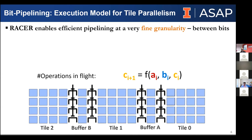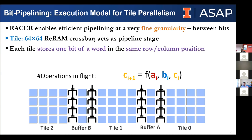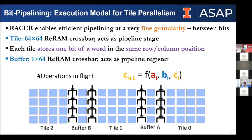We find a way to do very fine-grain pipelining that allows us to make up for a lot of this performance. We have tiles that we treat almost the same as pipeline stages. Each tile holds one bit of one word, so multiple tiles are needed to make up a single word of data. We introduce buffers also made out of ReRAM that allow us to communicate from tile to tile without any domain transformations.